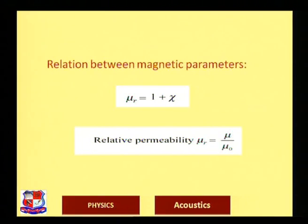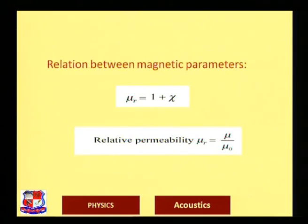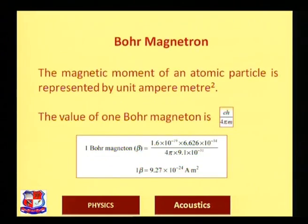The relation between magnetic parameters: the relative permeability μᵣ = 1 + χ. Relative permeability can also be defined as absolute permeability divided by the permeability of free space: μᵣ = μ/μ₀.